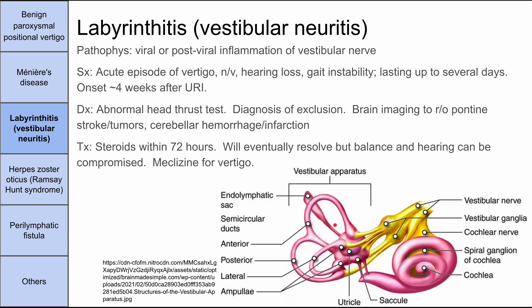Treatment for labyrinthitis is steroids, ideally given within 72 hours, which help it resolve. It's possible that balance and hearing problems persist longer term. You can also give meclizine for acute relief of vertigo.